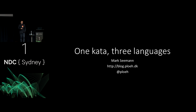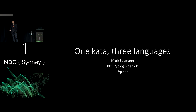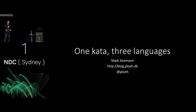This talk is called 'One Kata, Three Languages.' I'm going to do a software kata, a little exercise. I'm going to do some live coding while I do that, and I'm going to do it in three languages: C#, Haskell, and Clojure. If you've never seen Haskell or Clojure before, you're in the right place — the idea is to give you a brief introduction to those languages.